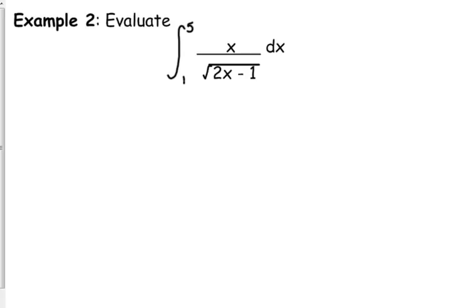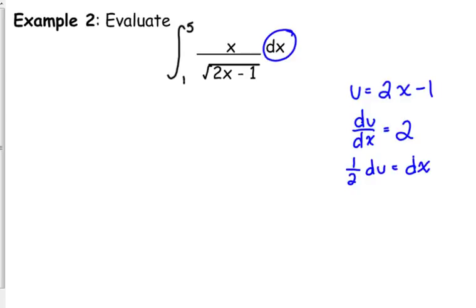So, my u is the expression under the radical, 2x minus 1. So, du over dx is 2. I do not have a 2 in my problem, so that has to move to the other side. So 1 half du is equal to dx. So, I've got something to substitute for that. This is my u. I don't have anything to substitute for my x.